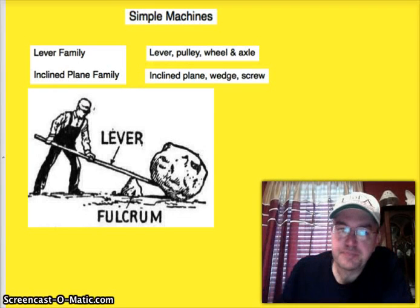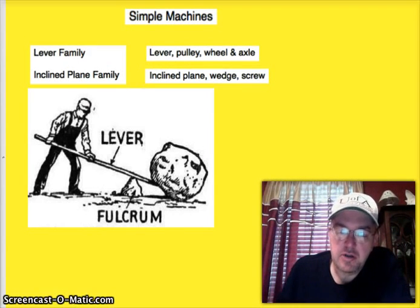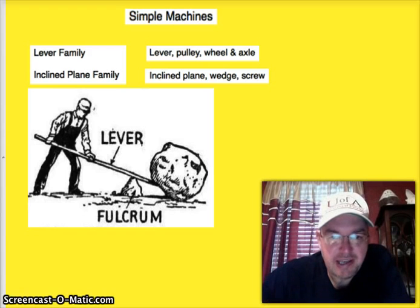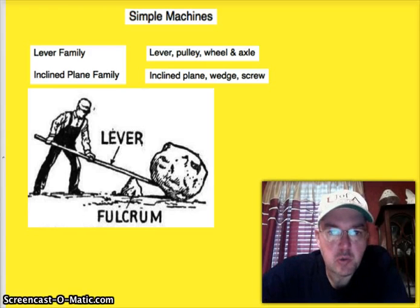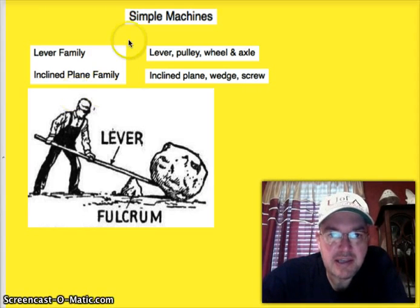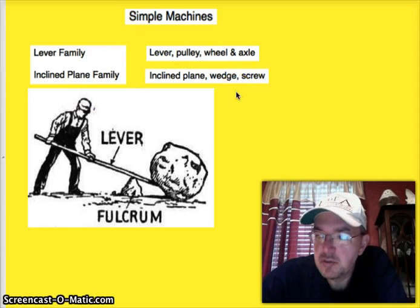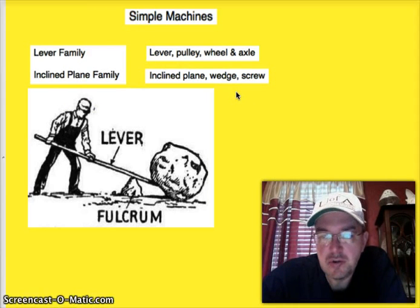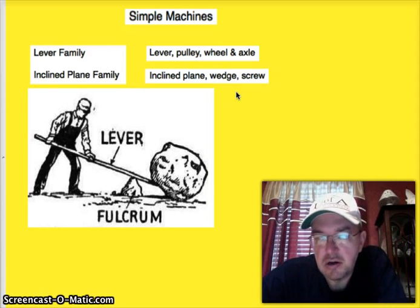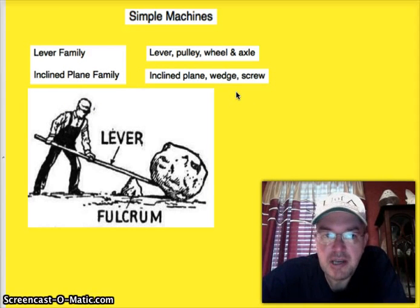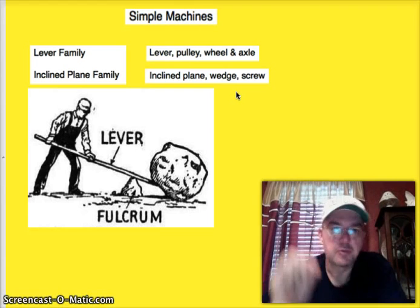Simple machines — you may be surprised how other machines can trace their origin back to these 1, 2, 3, 4, 5, 6 simple machines. All other machines are either modifications of simple machines or they're combinations of simple machines.